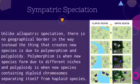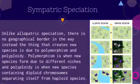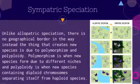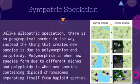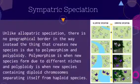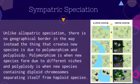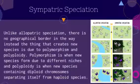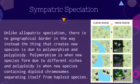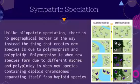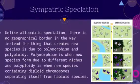Sympatric speciation, unlike allopatric speciation, has no geographical border. Instead, the thing that creates new species is due to polymorphism and polyploidy. Polymorphism is when new species form due to different niches, and polyploidy is when new species containing diploid chromosomes separate themselves from haploid species.